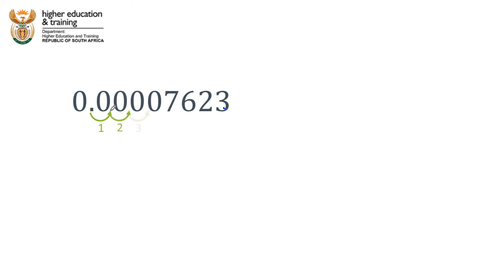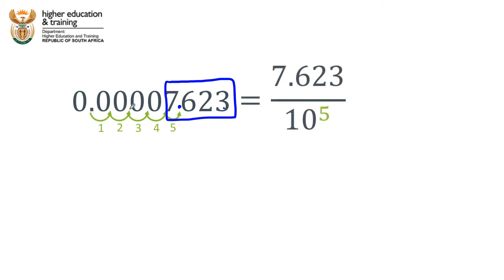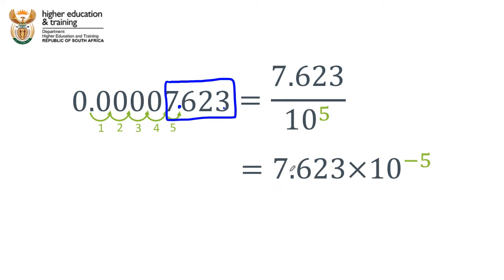Here's a nice example to practice with: let's write 0.00007623 in scientific notation. We move the decimal one place, two places, three places, four places, five places. Moving it five places gives us the new number 7.623. But because we've multiplied by 100,000, we need to divide by 100,000 — that's 10 to the power 5. So the exponent on the 10 is 5, and we can write this in scientific notation as 7.623 times 10 to the negative 5.